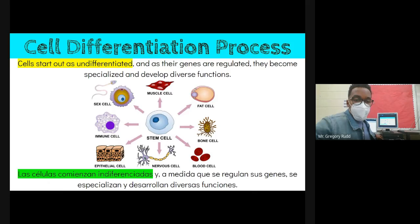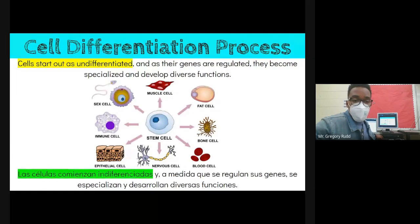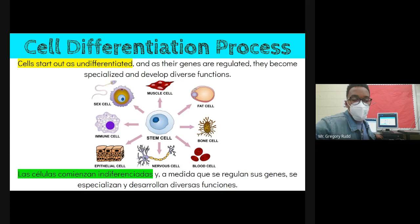Cells start off as undifferentiated, but then gene regulation kicks in and the cells become specialized. They start off as undifferentiated stem cells, but as certain genes are turned on and others turned off, the cells get a specific job.